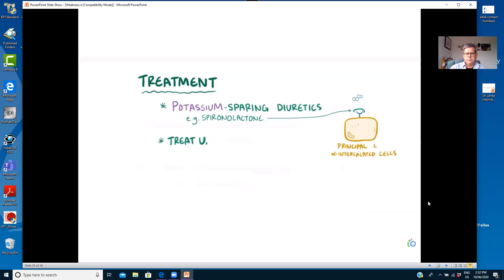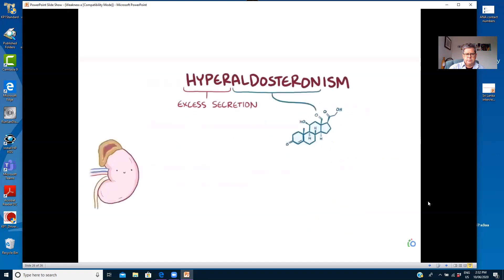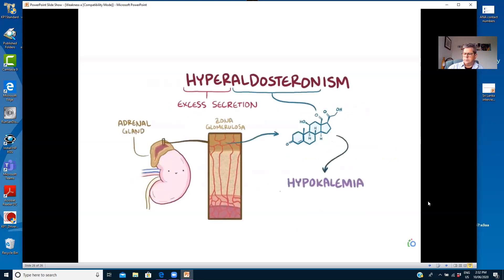Additionally, treating the underlying cause can also be helpful. For example, in Conn's syndrome, surgical removal of the tumor can help, and also managing heart failure and cirrhosis. Alright, as a quick recap, hyperaldosteronism is the chronic excess secretion of aldosterone from the zona glomerulosa cells of the adrenal gland. And these high aldosterone levels can lead to hypokalemia, hypernatremia, hypertension, and a metabolic alkalosis.